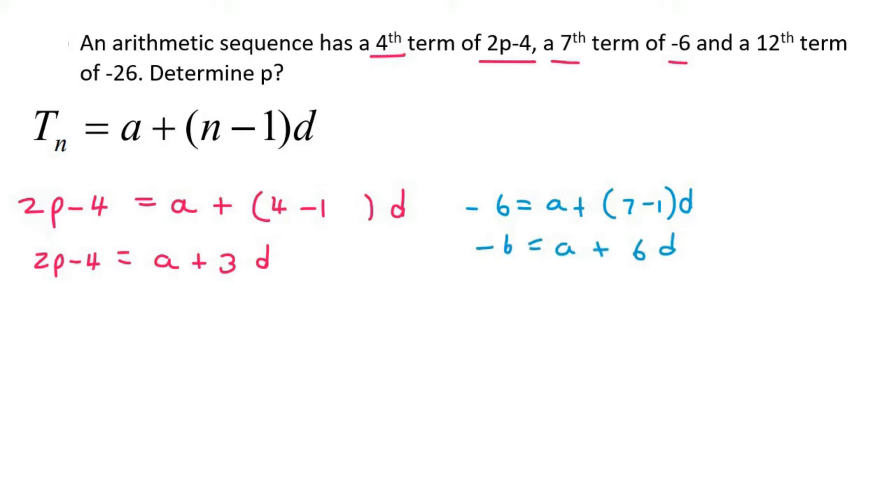Then we need our third piece of information, a twelfth term of minus 26. So we can say minus 26 equals a plus 12 minus 1 times d, which we don't know. I'm just going to neaten this one up. 11d. All right.